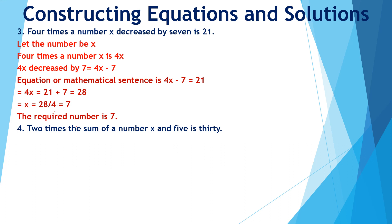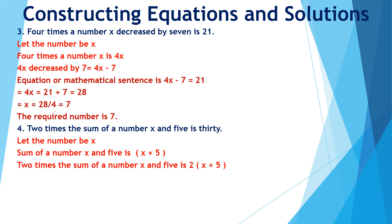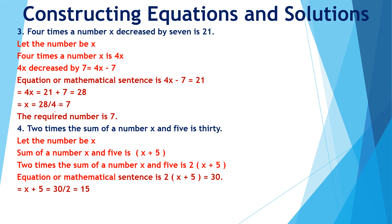2 times the sum of a number x and 5 is 30. Let the number be x. The sum of the number and 5 is x plus 5. So 2 times the sum of a number x and 5 will be equal to 2 times (x plus 5), which equals 30. On solving this equation, we get x equal to 10. So the required number is 10.